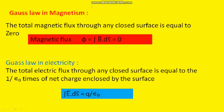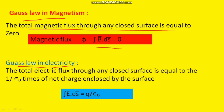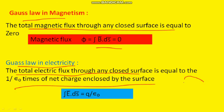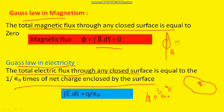Now let us look at Gauss's law in magnetism: the total magnetic flux through any closed surface is equal to zero. In electricity, Gauss's law states that the total electric flux through any closed surface equals 1 by epsilon_r times the net charge enclosed by the surface. But in magnetism, whatever the closed surface, the magnetic flux is always equal to zero. Electric flux may or may not equal zero depending on the enclosed charge, but magnetic flux is always zero.